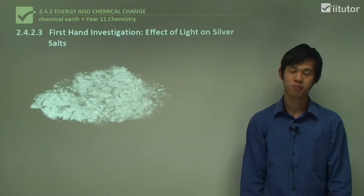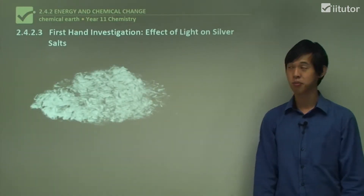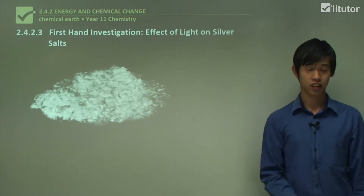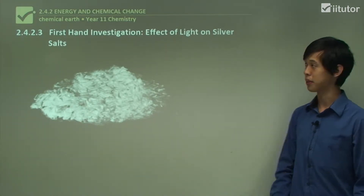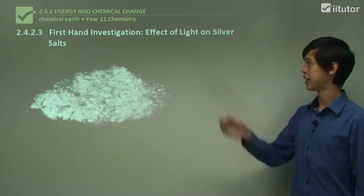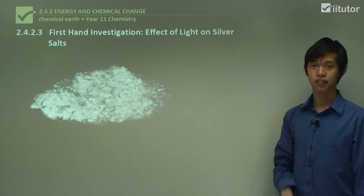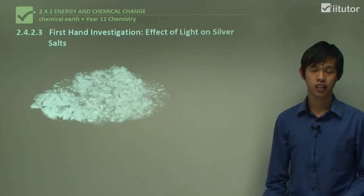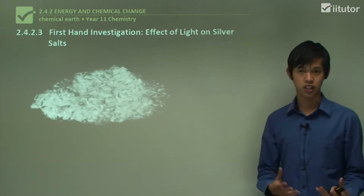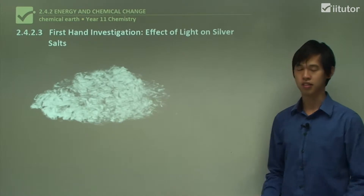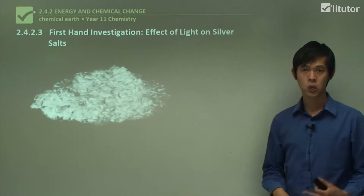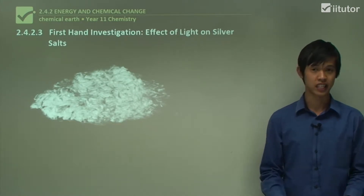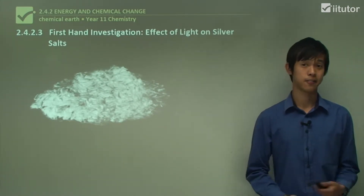Hello everyone, welcome again. Today's lesson will be on the Chemical Earth module in Year 11 Chemistry. In particular, we'll be looking at this first-hand investigation on the effect of light on silver salts. We're going to look at what we're going to do in this experiment and how to perform it safely and in a scientifically valid way.